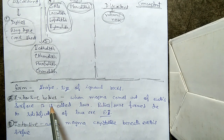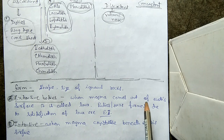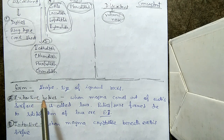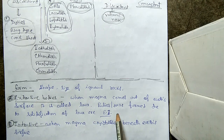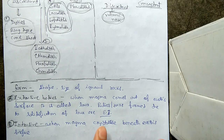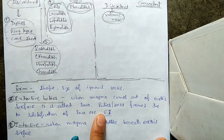Extrusive bodies: when magma comes out of the earth's surface it is called lava, and the bodies formed due to solidification of lava are called extrusive bodies. Intrusive bodies: when magma crystallizes under the earth's surface, it is called an intrusive body.